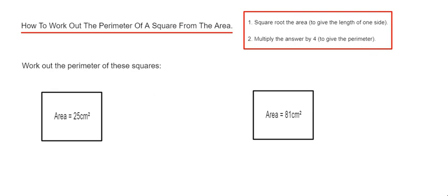Let's do our first example. The first one has an area of 25 cm². If we square root the area to give the side length, the square root of 25 is 5, because 5 times 5 is 25.